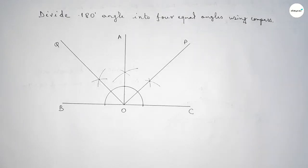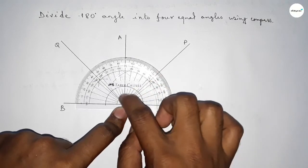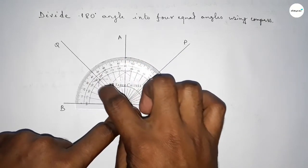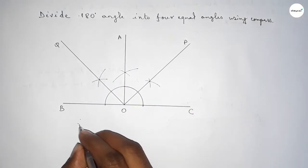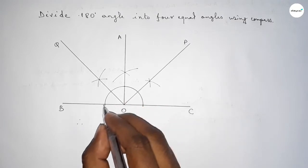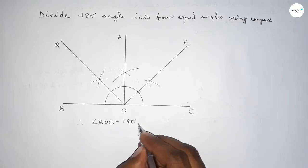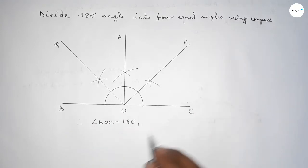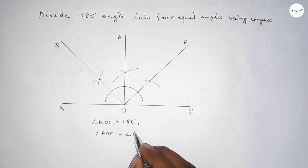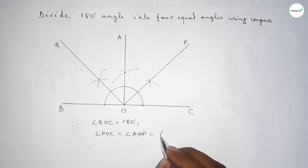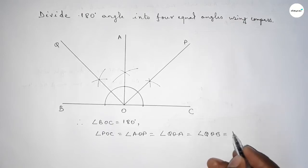Now checking the angles: this is 45 degrees, this is 90 degrees, this is 135 degrees, and this is 180 degrees. Therefore angle BOC equals 180 degrees, and angle POC equals angle POA, and angle QOA equals angle QOB.